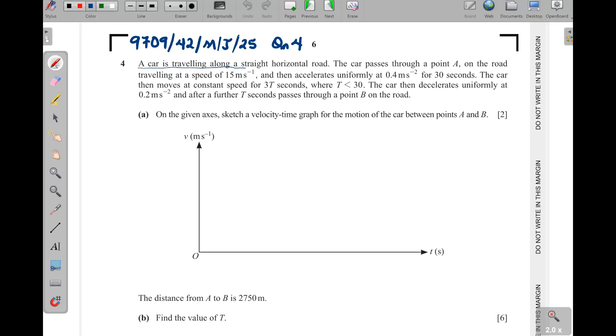Question 4. A car is travelling along a straight horizontal road. The car passes through a point A on the road travelling at a speed of 15 m per second and then accelerates uniformly at 0.4 m per second squared for 30 seconds. The car then moves at constant speed for 3T seconds. The car then accelerates uniformly at 0.2 m per second squared and after a further T seconds passes through point B on the road. On the given axis sketch a velocity time graph for the motion of the car between points A and B.